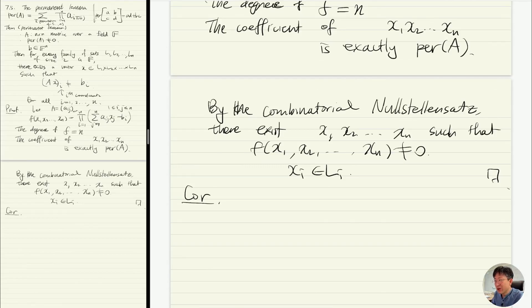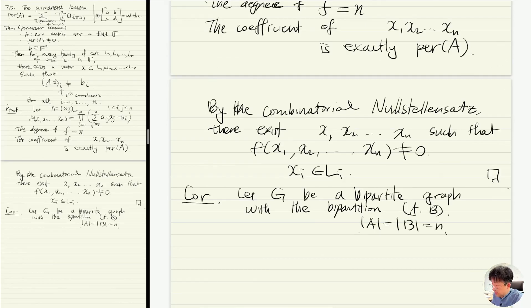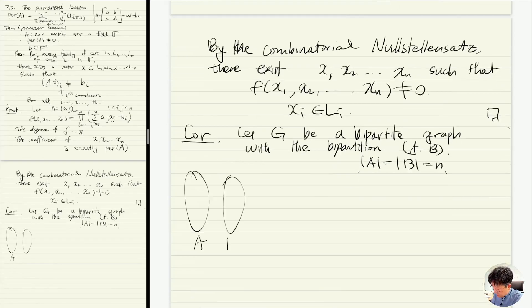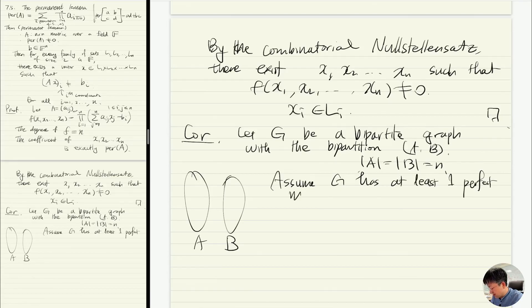Let me show you one corollary. Here's a corollary for graphs. Let's give you a bipartite graph with the bipartition A, B. Let's say both A and B have size n. And assume G has at least one perfect matching. This is to make sure that certain matrix has a non-zero permanent.